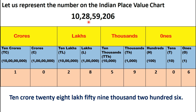Let us consider an example and place the digits in the place value chart, starting from the ones period, that is starting from the right. So we write 6 under ones column, 0 under tens, 2 under hundreds, 9 under thousands place, 5 under 10 thousands, 8 under lakhs column, 2 under 10 lakhs, 0 under crores, and lastly 1 under 10 crores place. We can also represent this number in words as 10 crore 28,59,206.